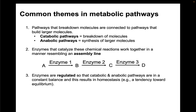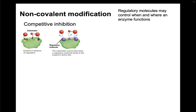Enzymes are regulated, and one reason is that catabolic and anabolic pathways should be in constant balance — we should be breaking down things and making things. This results in homeostasis, or a tendency towards equilibrium. There are two types of enzyme regulation: non-covalent regulation, where we're not forming covalent bonds, and covalent regulation, where we're making or breaking covalent bonds.